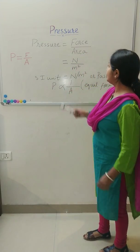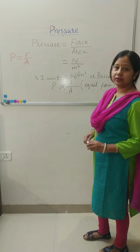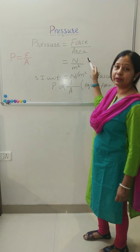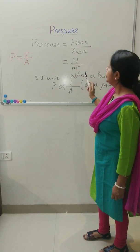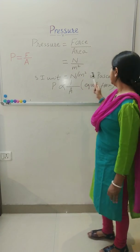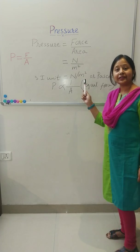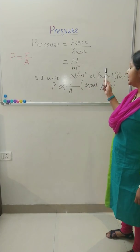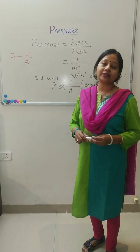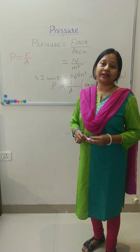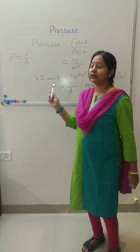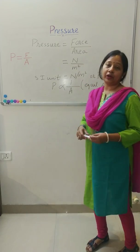Now let us find out the SI unit. The SI unit of force is Newton and the SI unit of area is metre square. So the SI unit of pressure is Newton per metre square. There is another SI unit of pressure — that is Pascal. There was a well-known scientist, Blaise Pascal, who did many experiments based on this topic. So to honor him, this name Pascal has been coined.